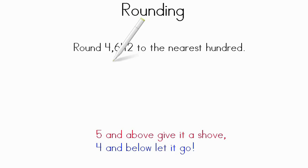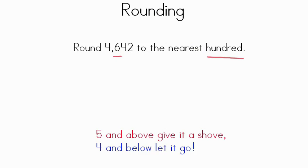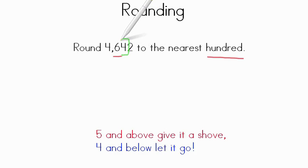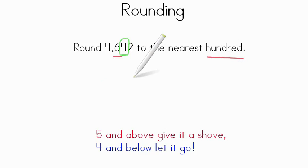Let's try it again. Now we have: round 4,642 to the nearest hundred. So we have the ones, the tens, the hundreds right here. Where am I going to go to figure out where I need to round? That's right — look to the one to the right. We're going to look at the tens here. So we have a 4 in the tens, and we have to round to the nearest hundred — not the thousands, not the tens, not the ones, but the hundreds. So we have to figure out our two benchmark numbers.